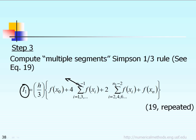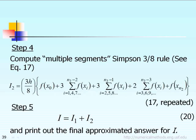Step 4: We compute Simpson 3/8 rule multiple segment based on Equation 17 to calculate I₂. Keep in mind, n2 represents the number of segments you use for Simpson 3/8 rule. If n2 equals 3, that means you use a single segment.